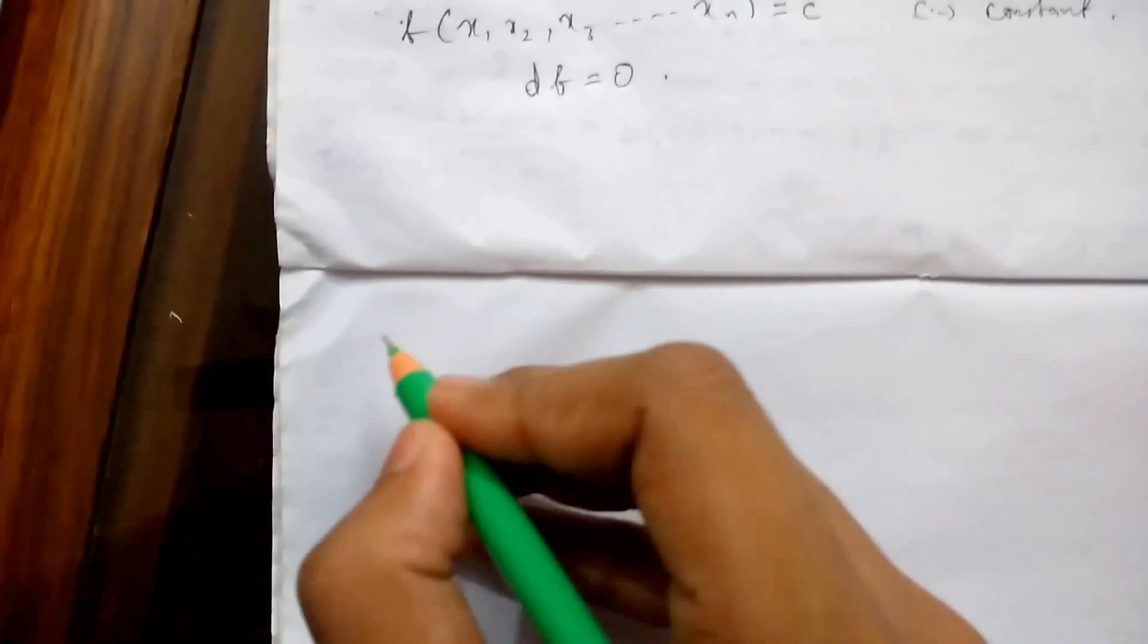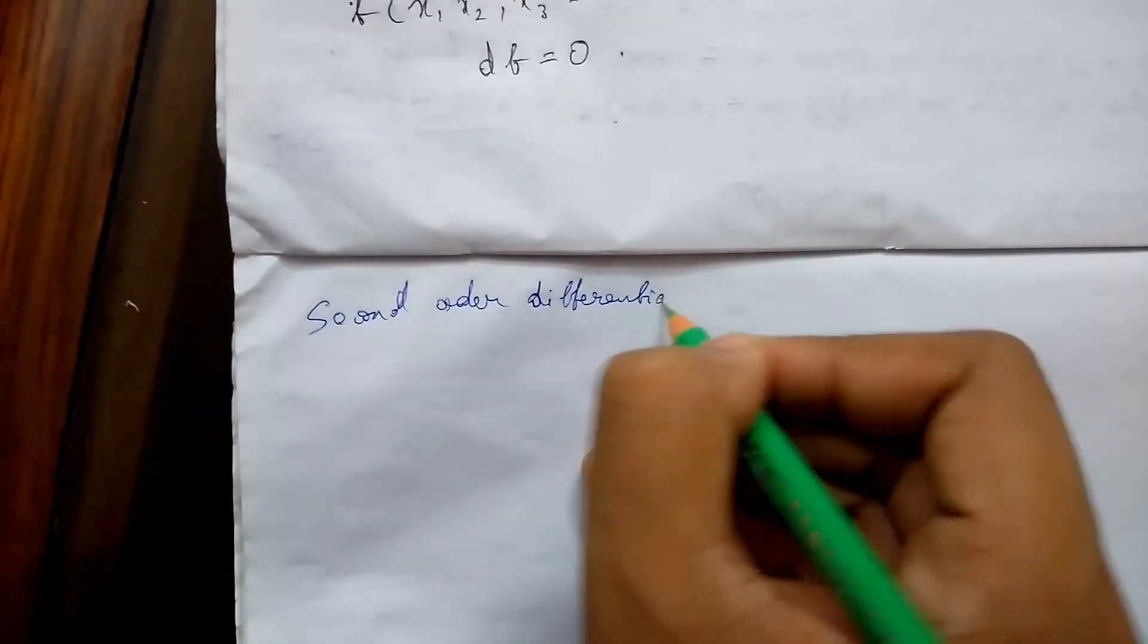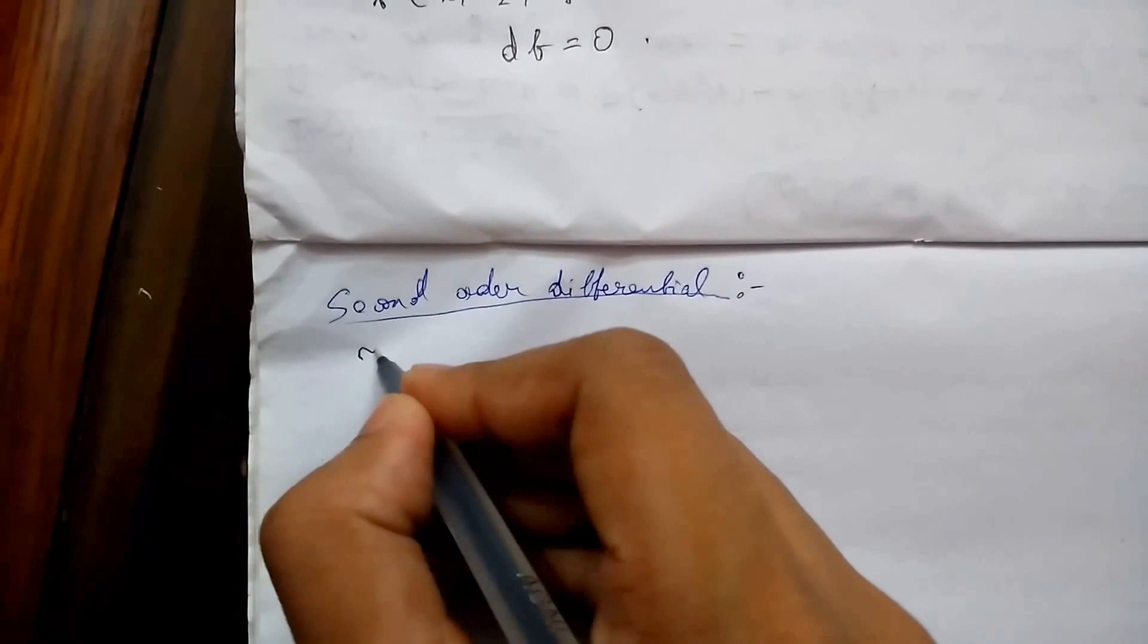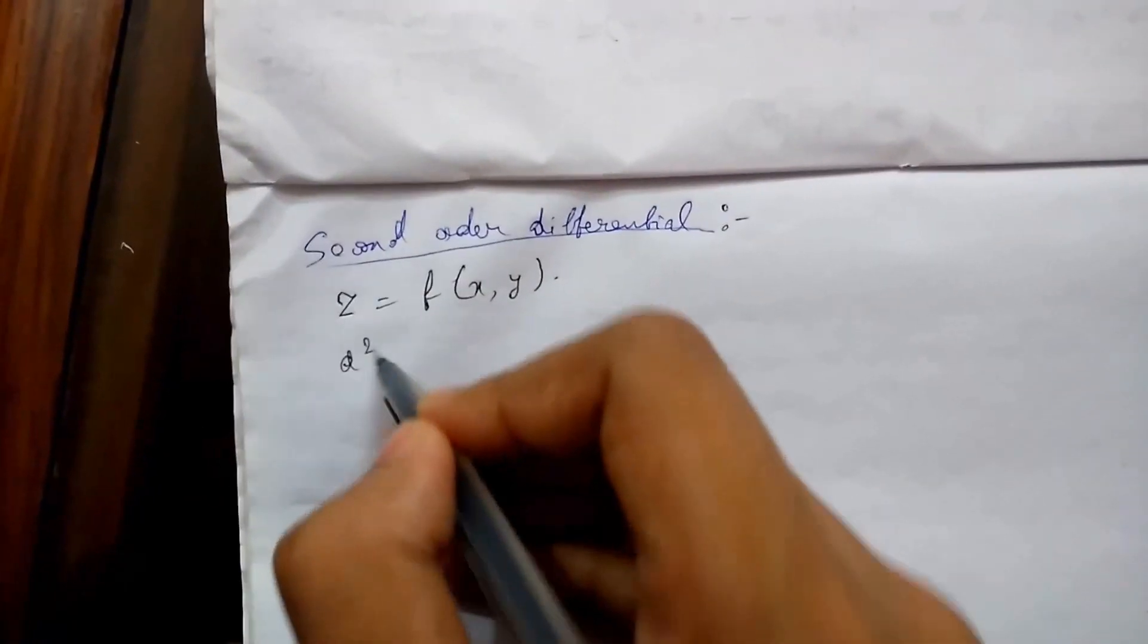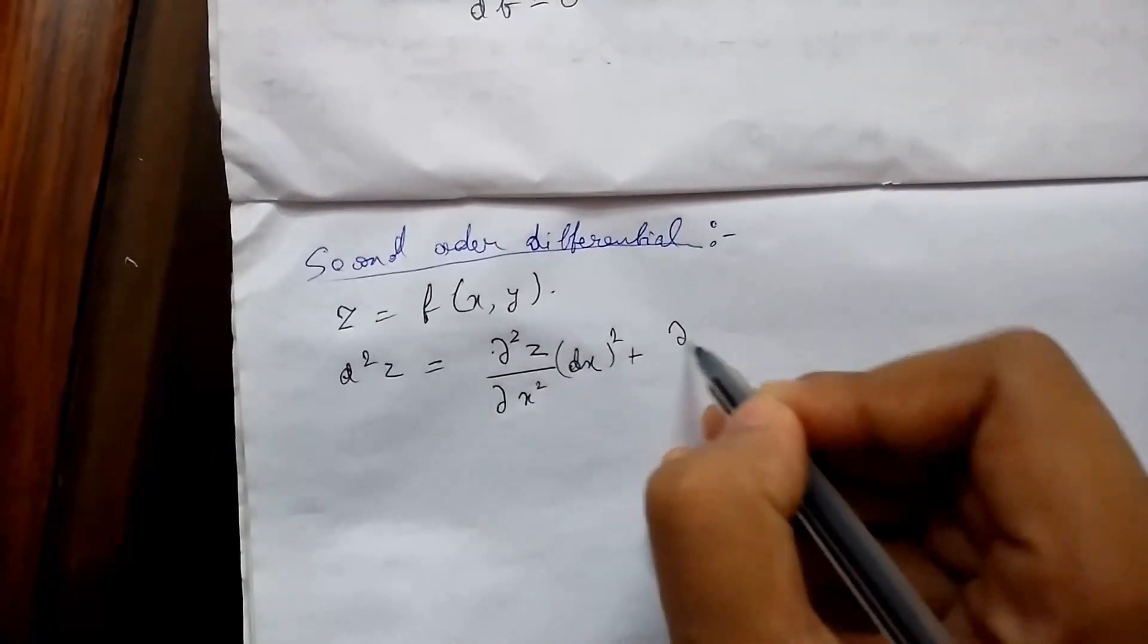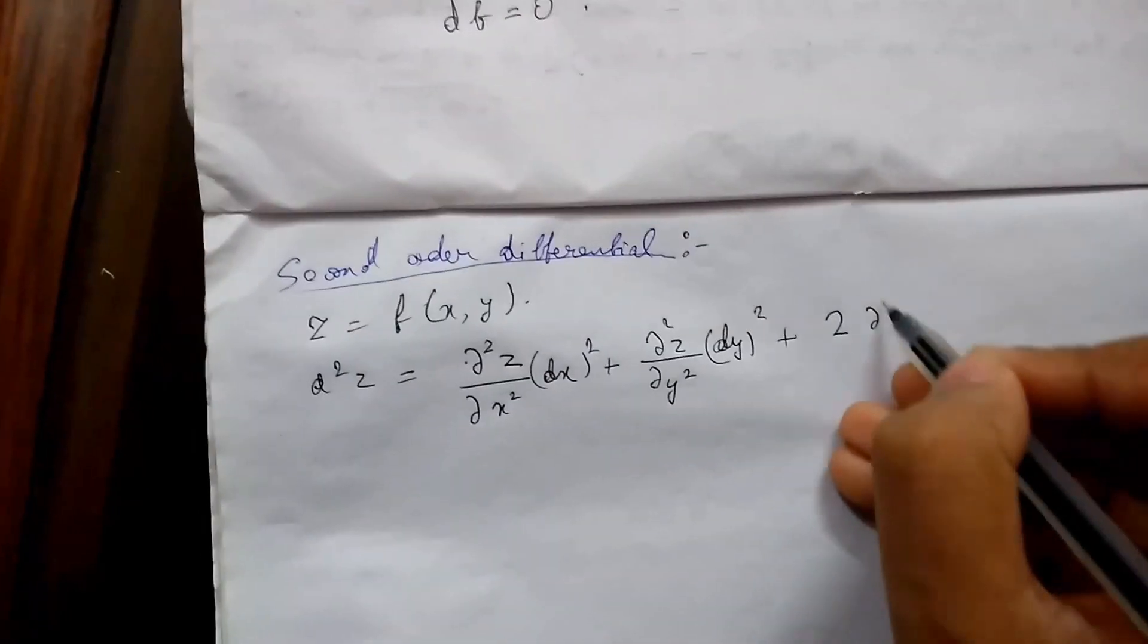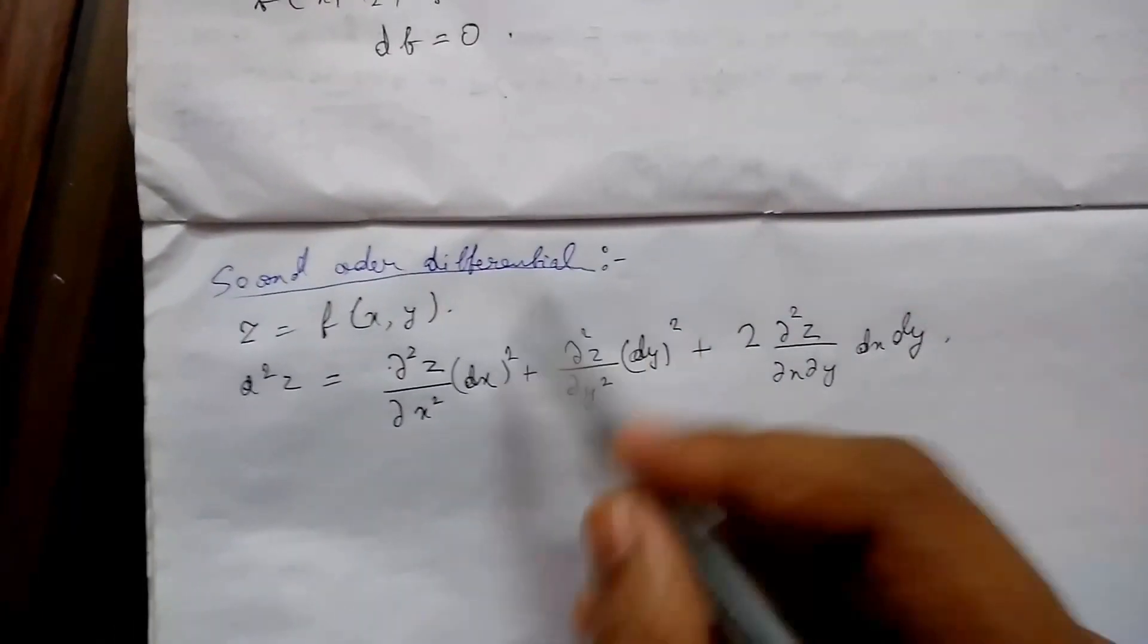Now let us see second order differential. Suppose if z equals f of xy be a function of two independent variables x and y, then we can write that d2z equals del square z upon del x square dx whole square plus del square z upon dy square dy whole square plus 2 del square z upon del x del y dx dy. So this is our second order differential.